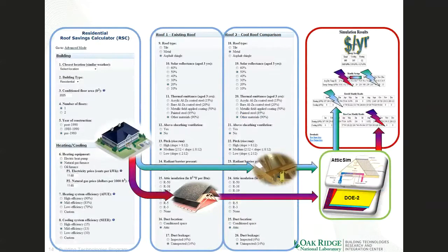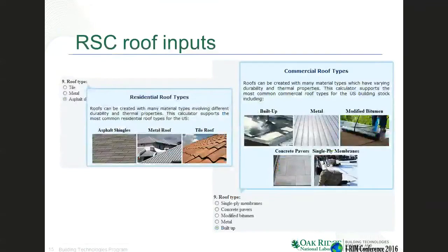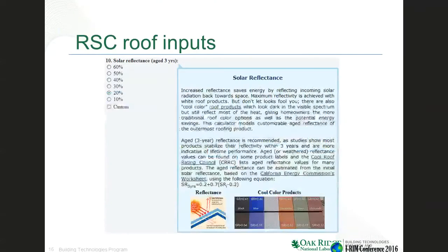Once you put in the building and HVAC details, we get into the core of the simulation comparison: here's my roof and attic system and what can I do to make it more energy efficient? About 90% of homes have asphalt shingles on their roof, but you can also have metal or tile roofs. We're actually simulating the turbulent airflow over these different profile tiles with very high fidelity physics. For commercial roof types, built-up roof is probably the most popular, but there's also metal, concrete pavers, single ply membranes, and other materials — we simulate the thermal mass, thermal conductance, specific heat, emittance, and reflectivity of all these surfaces.